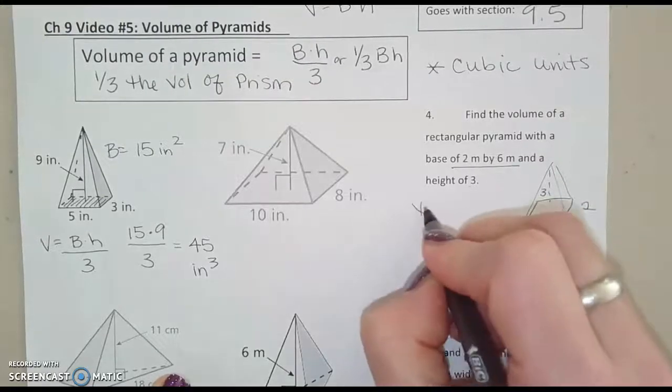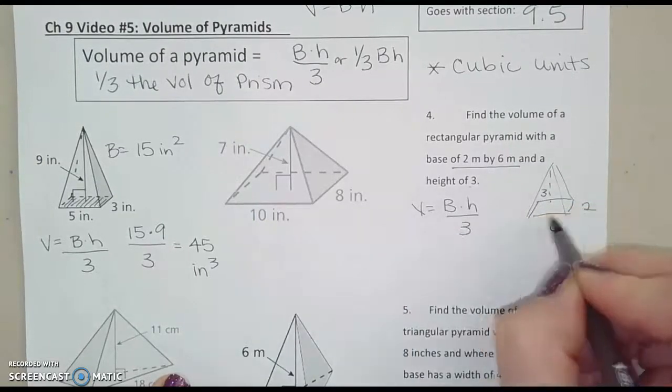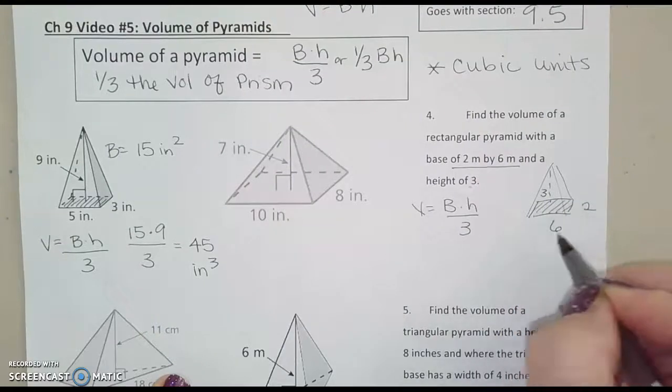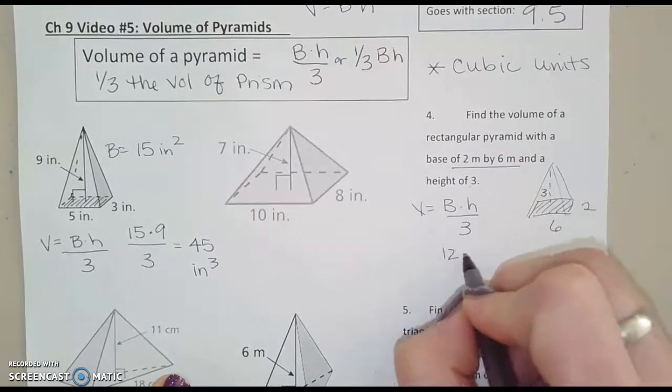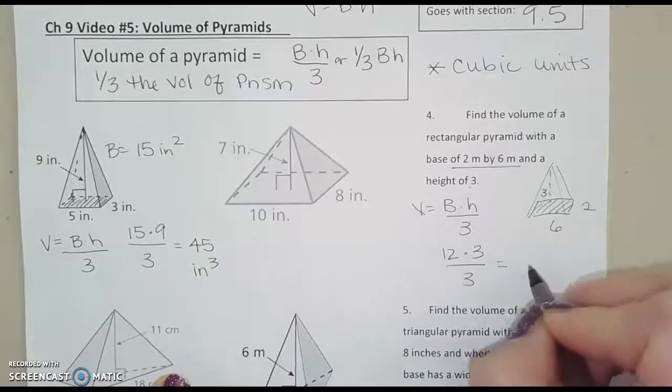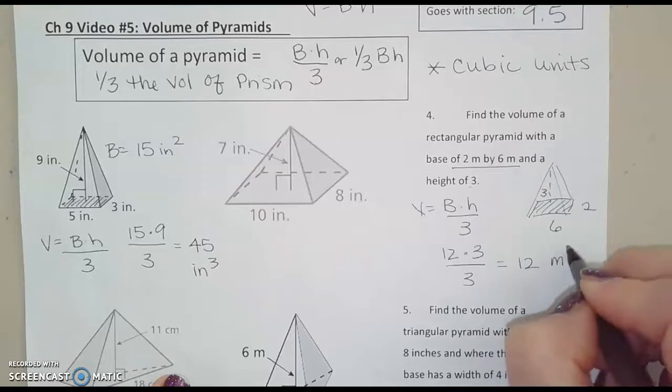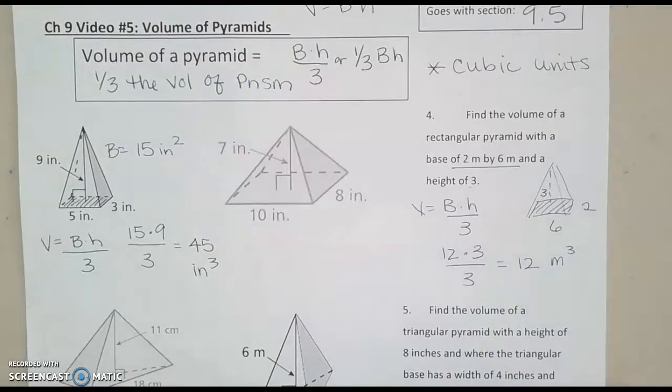Well, volume is equal to capital B, area of the base, times height, divided by 3. So for this one, the area of the base, 6 times 2 is 12, times the height of 3, and then divided by 3, well, that just gives us 12. And we said meters, so cubic meters.